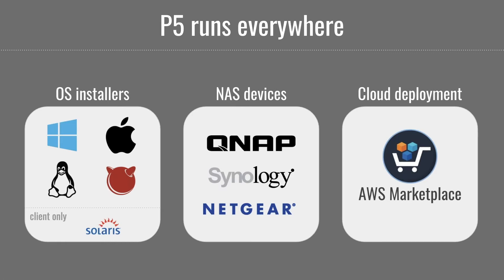P5 runs everywhere. We support all regular operating systems: Windows, Mac, Linux, FreeBSD for free NAS servers, and Solaris as a data source and destination. For NAS devices, we're in the stores for QNAP, Synology, and Netgear — log into your QNAP web interface, search for RQWare, click install and have P5 running; all you need is a license. Cloud deployment is now trivial — in the Amazon Web Services Marketplace, search for RQWare or P5 and fire up a Linux box with P5 pre-installed, ready to take a license.